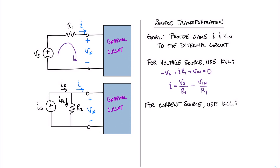Now let's take a look at how we can do a source transformation for our current source. At this point, we're setting up equations to compare so that we know how to proceed with the source transformation. For the current source, we have to use Kirchhoff's current law, which states that any currents coming into a node must equal all the currents exiting that node. So for KCL: I sub s minus I of R2 minus I equals zero. Solving for I, we get I equals I sub s minus I sub R2. Since the voltage across R2 equals Vn, we can write I equals I sub s minus Vn over R2.